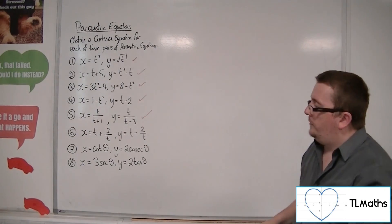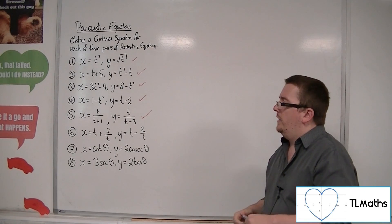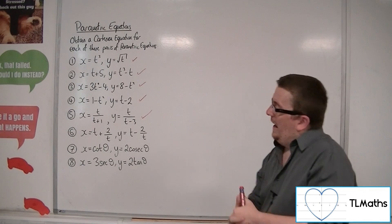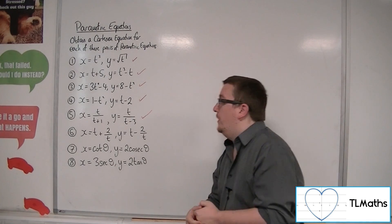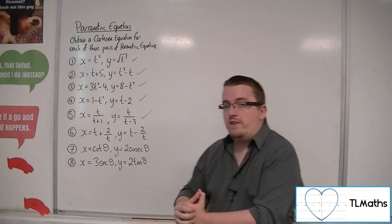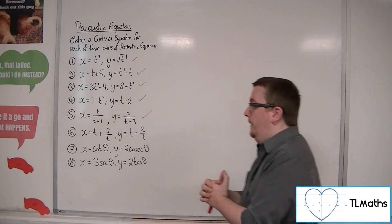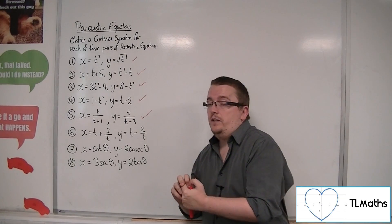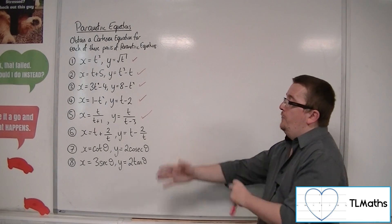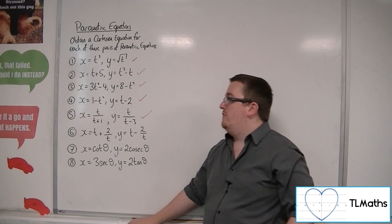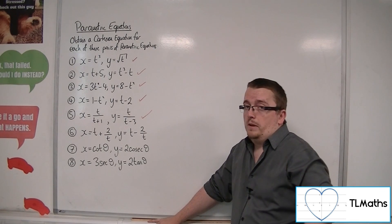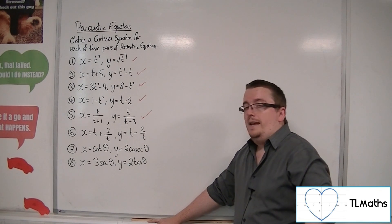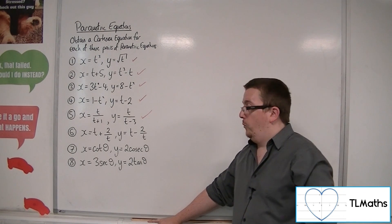Now, number 6 looks like it's going to be trouble. And the problem with number 6 is that neither x or y rearrange to get t equals. Okay, so in other words, I've got a problem. And 9 times out of 10, if you were in this situation and you couldn't rearrange either, that probably means that you can't get a Cartesian equation. However, with this one, you can.